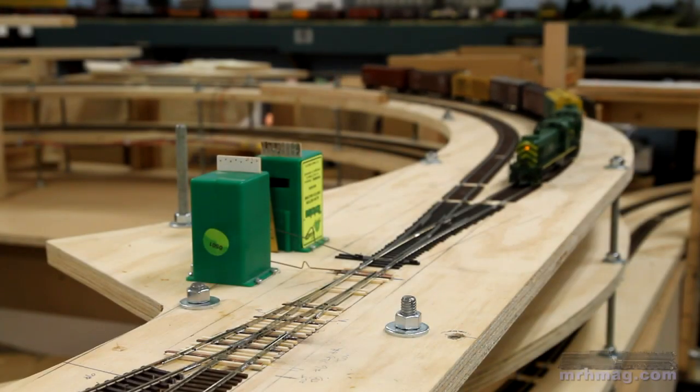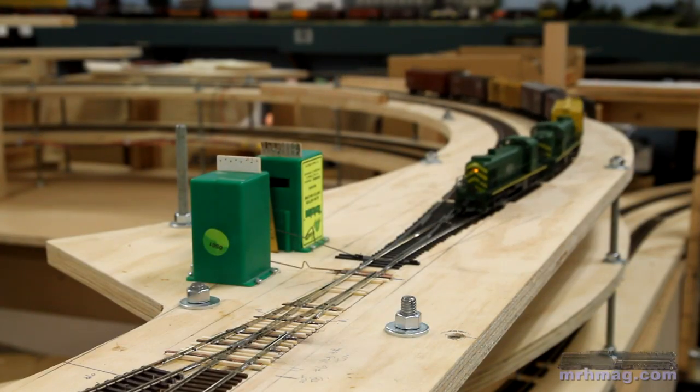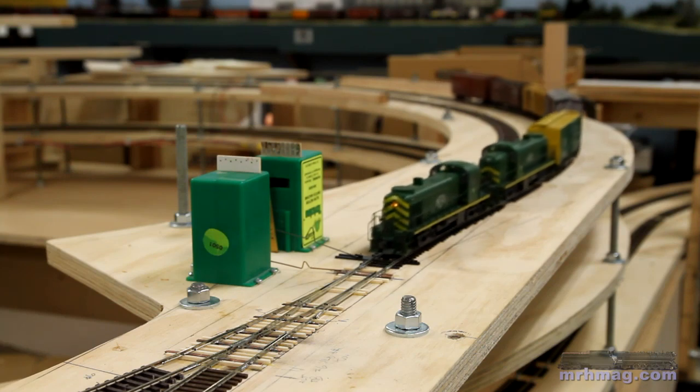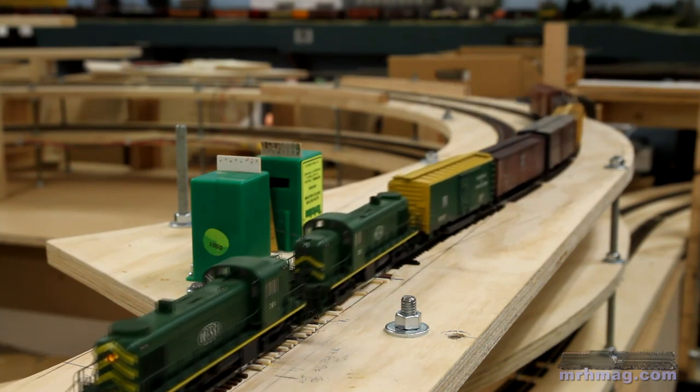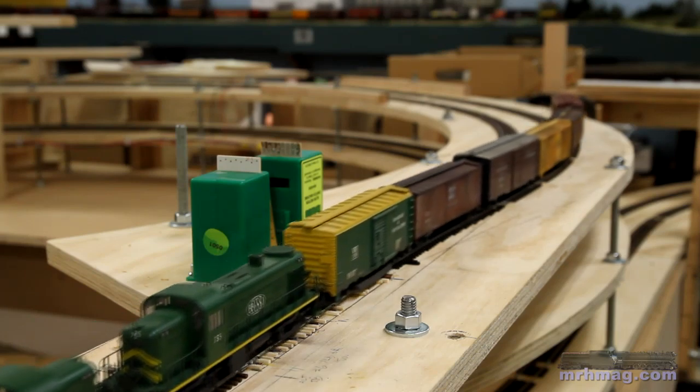Hi, I'm Charlie Comstock, Superintendent of Trackwork on the HO scale Bear Creek and South Jackson Railroad. You're witnessing a historic event, the first train to pass through the junction at the top of the helix.